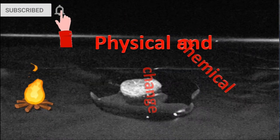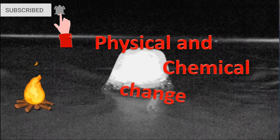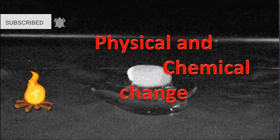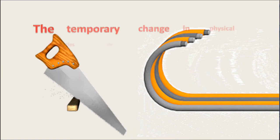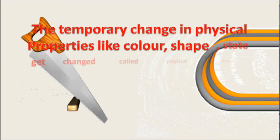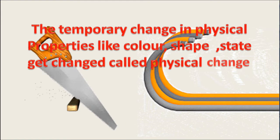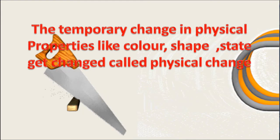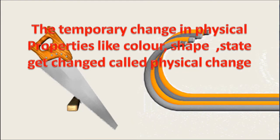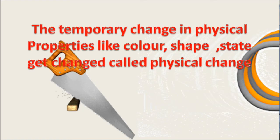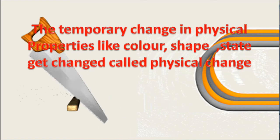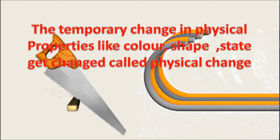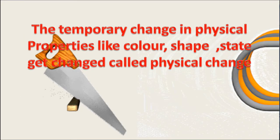Physical and Chemical Change. The temporary change in which physical properties like color, shape, and state get changed is called physical change. Cutting wood and bending of a rod are examples of physical change, because in such changes only physical properties like shape and size of the object get changed.